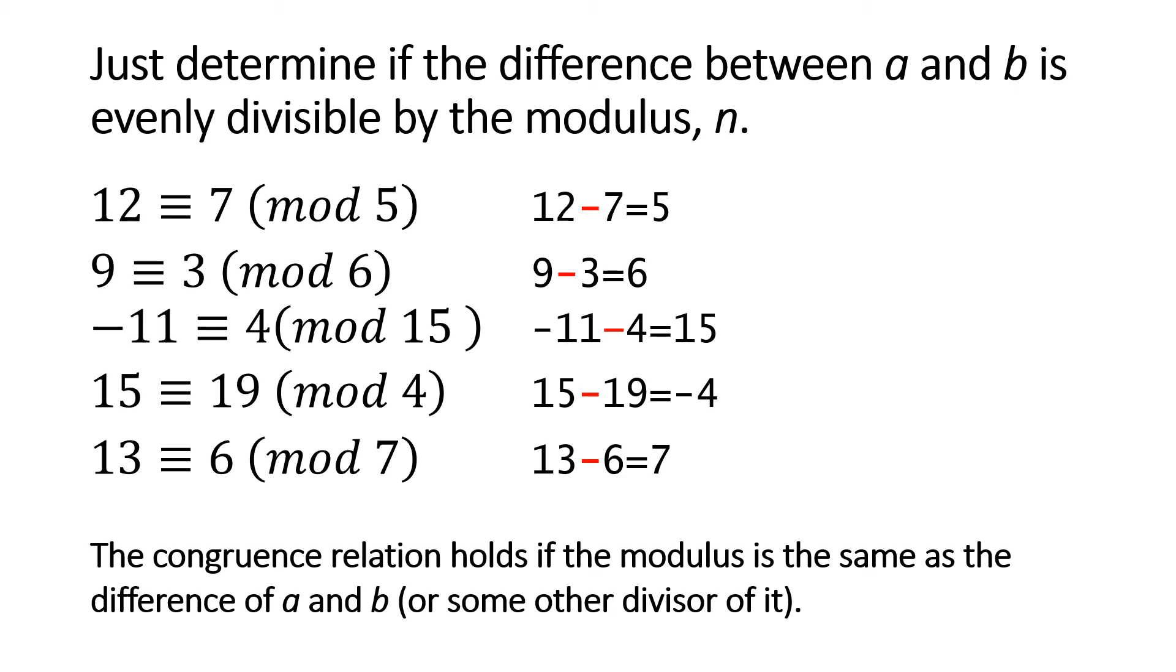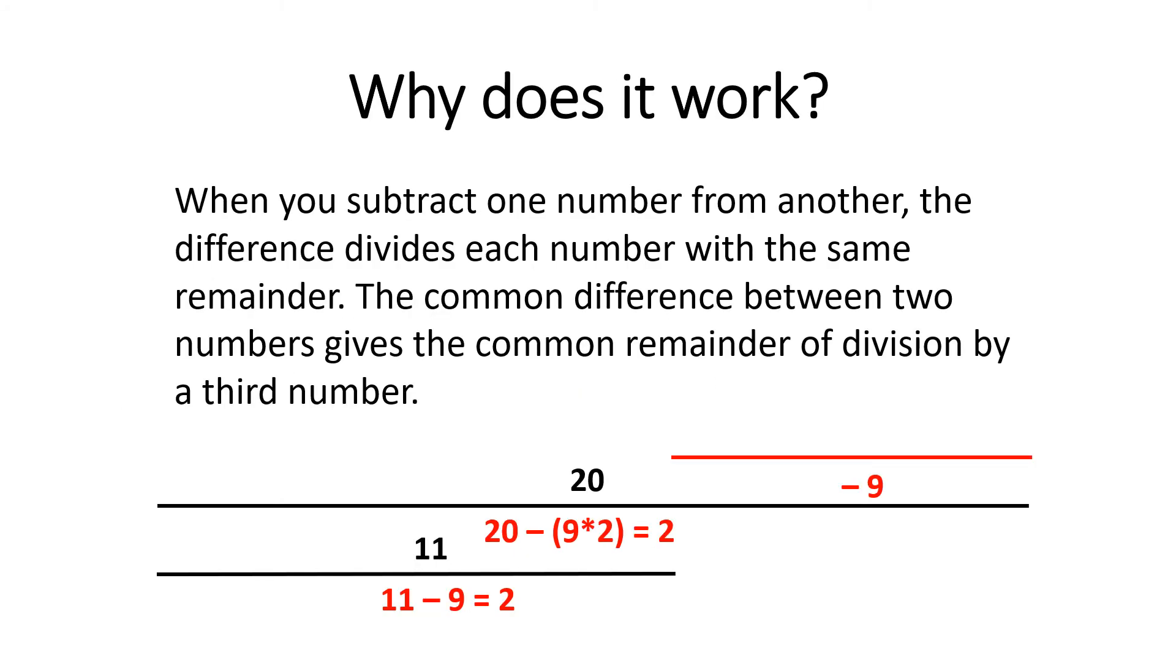Why does this work? Well, it's really a simple idea, and I guess it's a little bit counterintuitive, but it does work. When you subtract one number from another, the difference divides each number with the same remainder. The common difference between two numbers gives the common remainder of division by a third number.